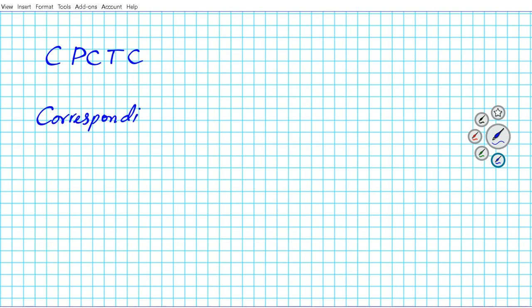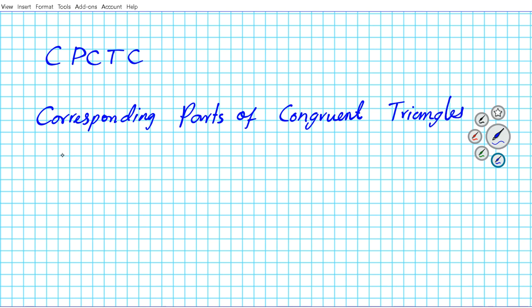So what does CPCTC mean? It basically means that corresponding parts of congruent triangles are congruent. So what we're going to be doing today is looking for which parts of the congruent triangles are corresponding — which pair of angles and which pair of sides are corresponding — mark them appropriately, and then we will have shown that the triangles are congruent.